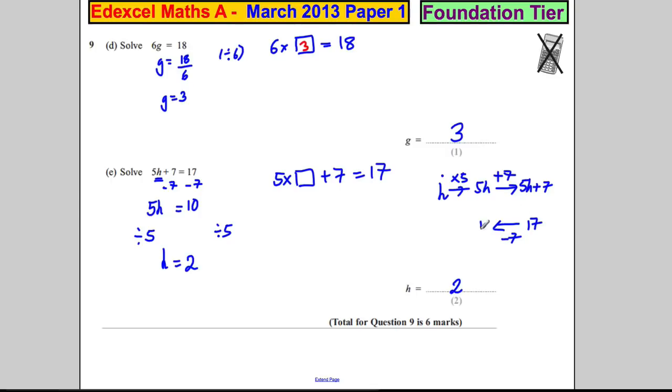So 17 subtract 7 is 10. Then to undo multiply by 5, you would divide by 5. 10 divided by 5 is 2, and that tells you that H must have been 2. There are many different ways of doing it - find the one that's comfortable for you.